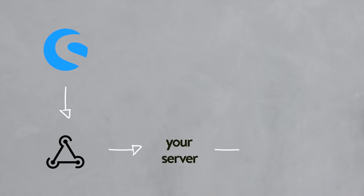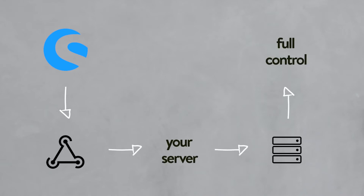At this point you may be asking yourself: what can an app do? Let me show you the architecture. You subscribe to so-called webhooks to events which in return call your external servers. From there on you have full control over the data and can call the Shopware API for additional data you need.